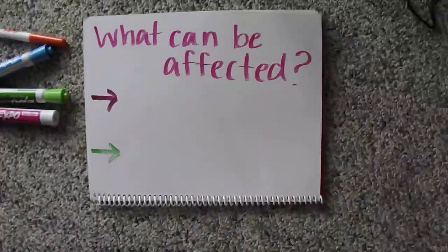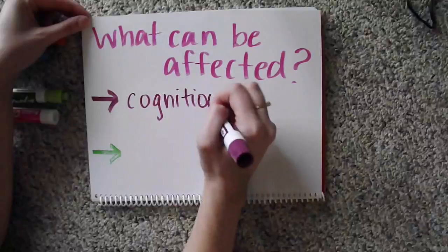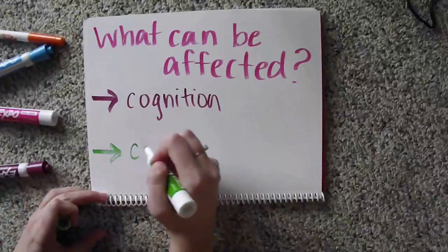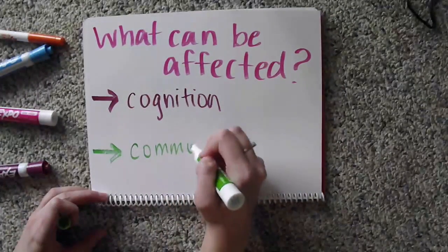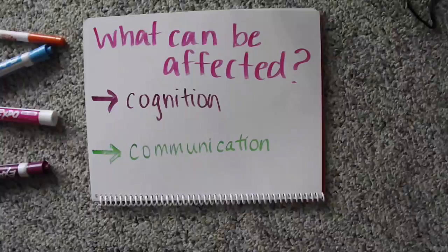Right hemisphere damage can impact an individual in many ways. Two of the main areas that can be impacted are an individual's cognition and communication.